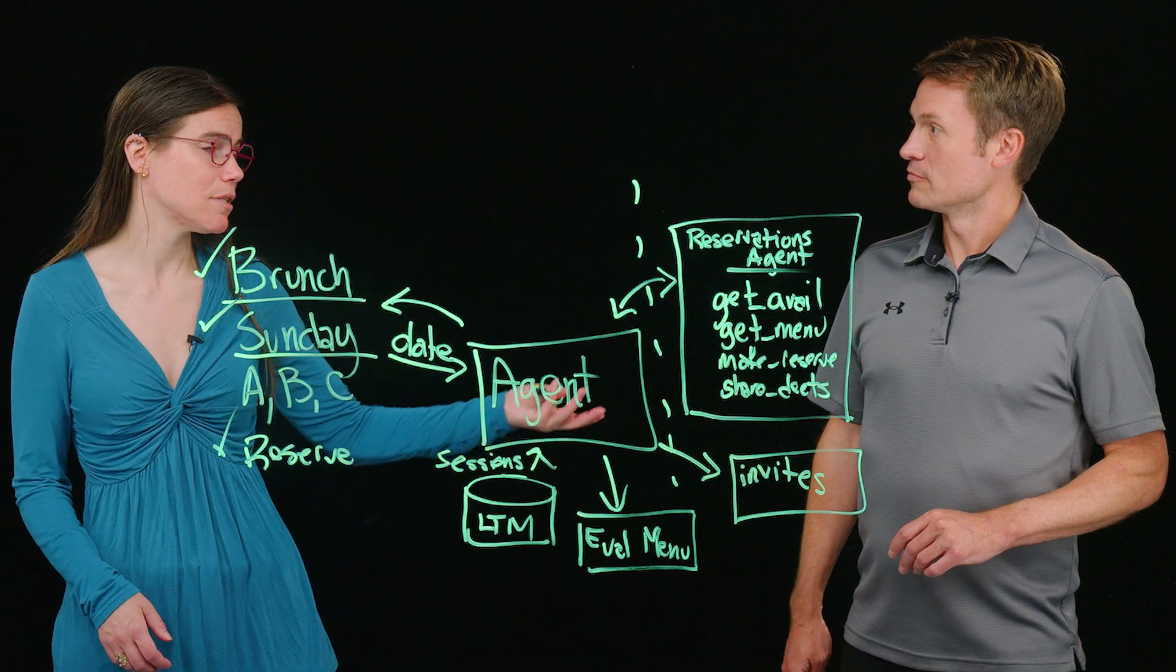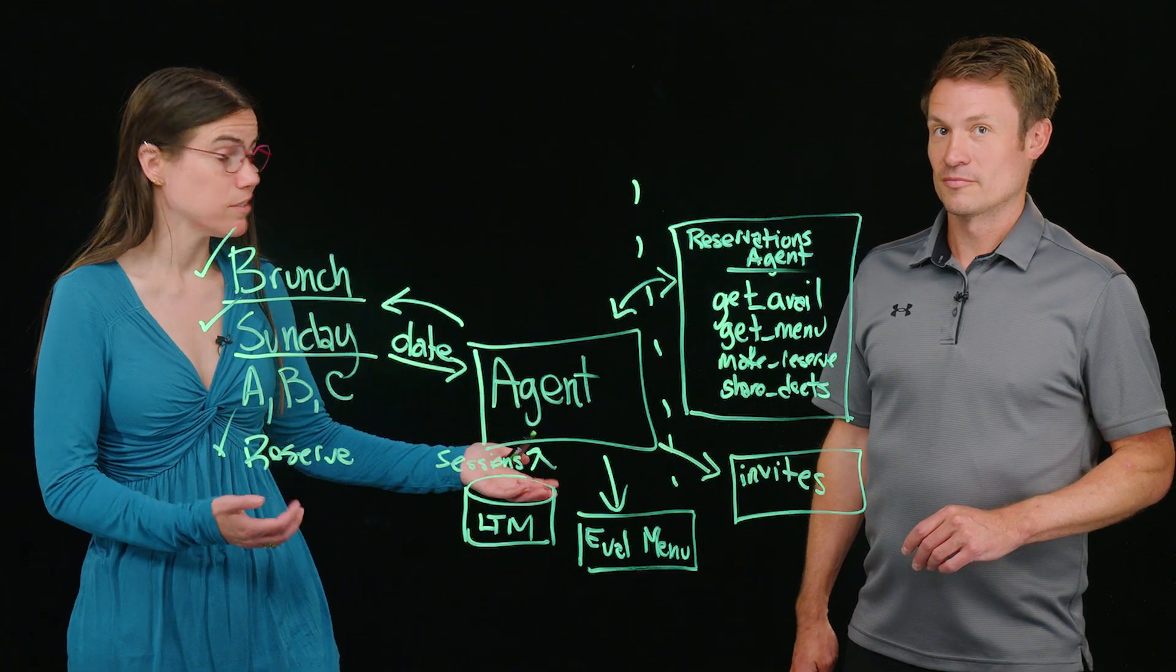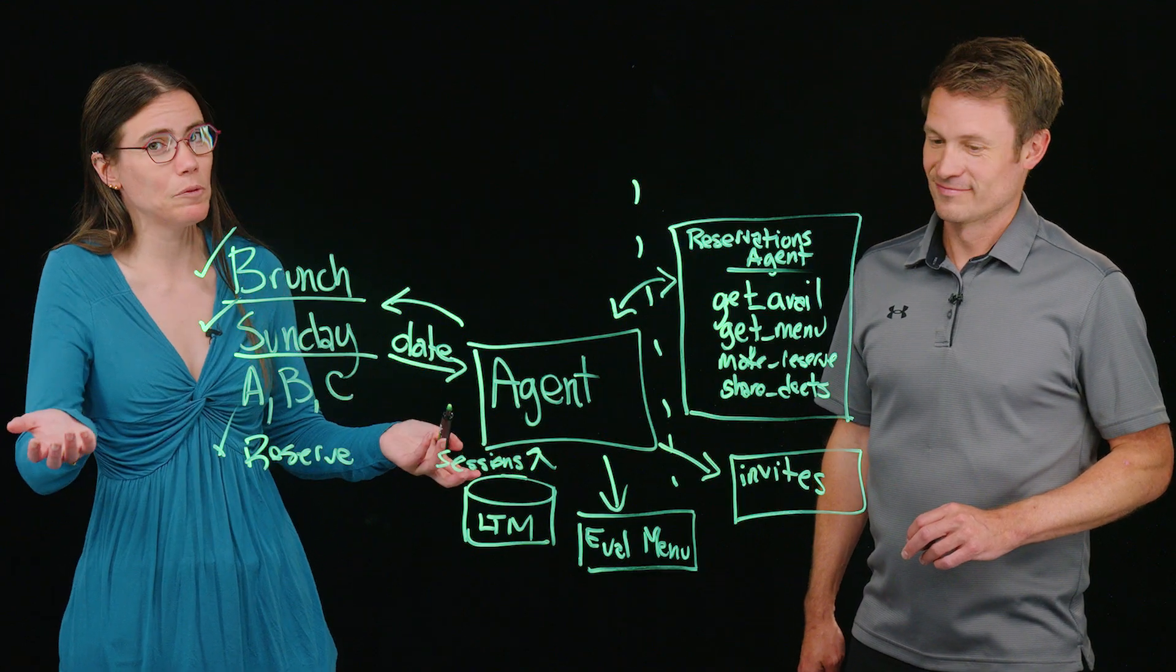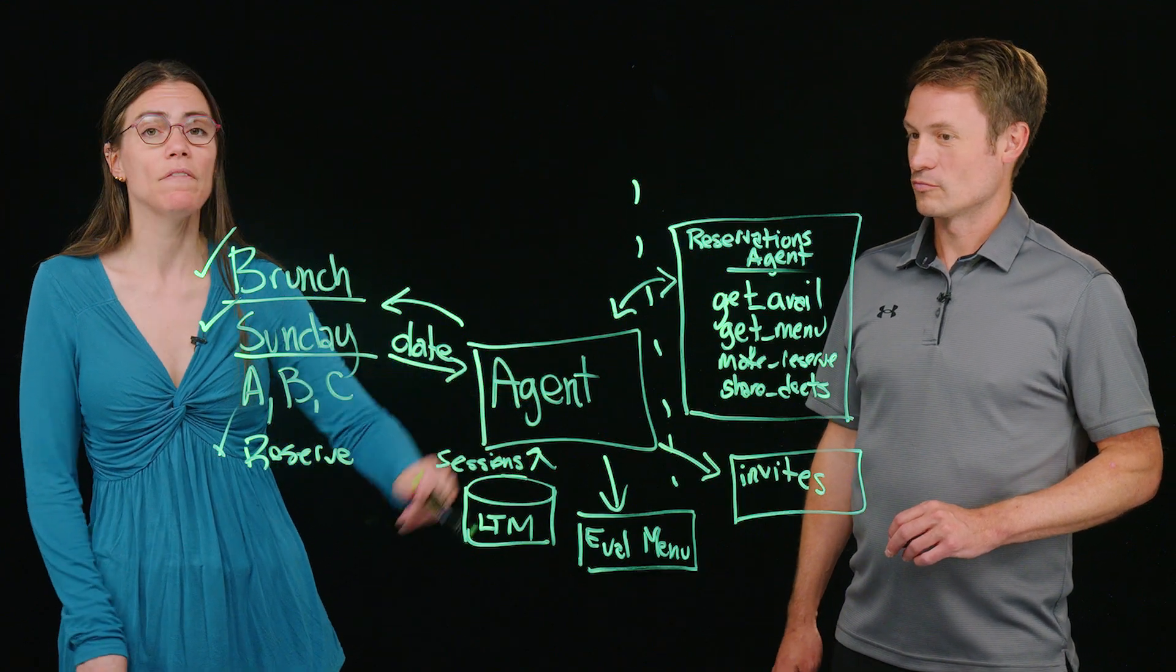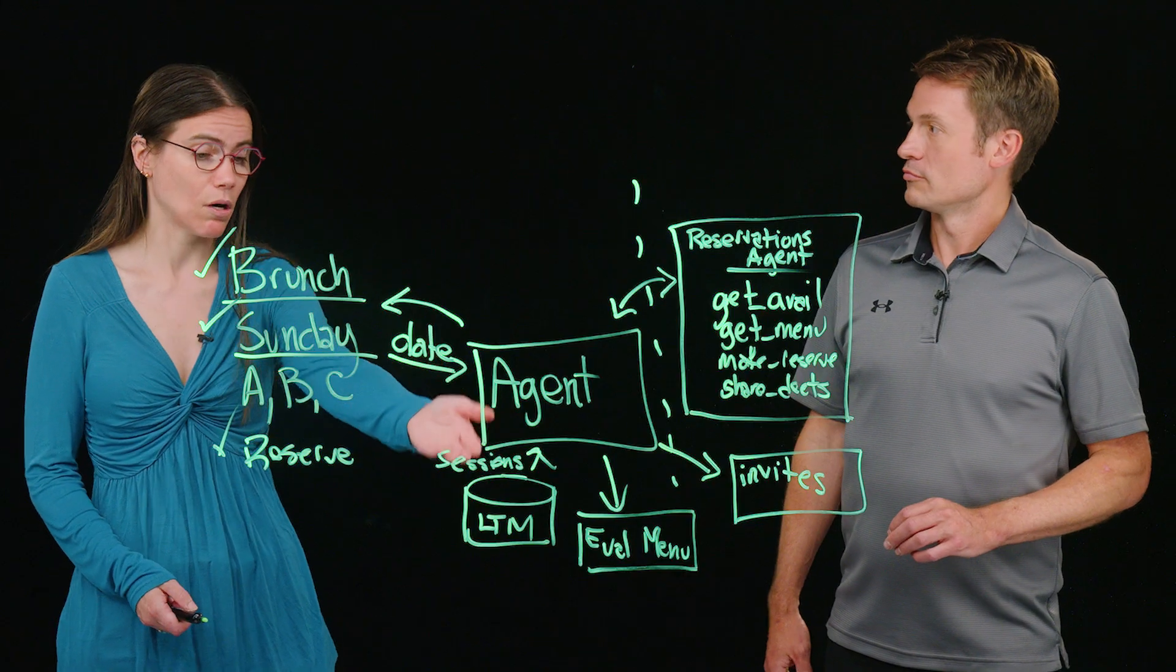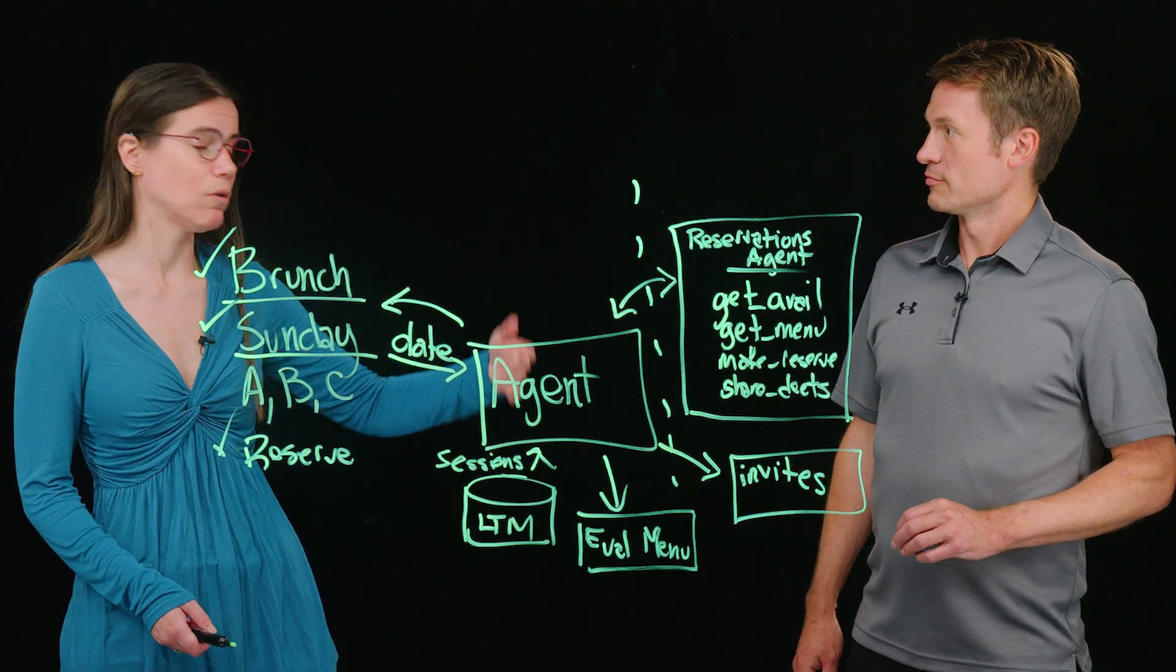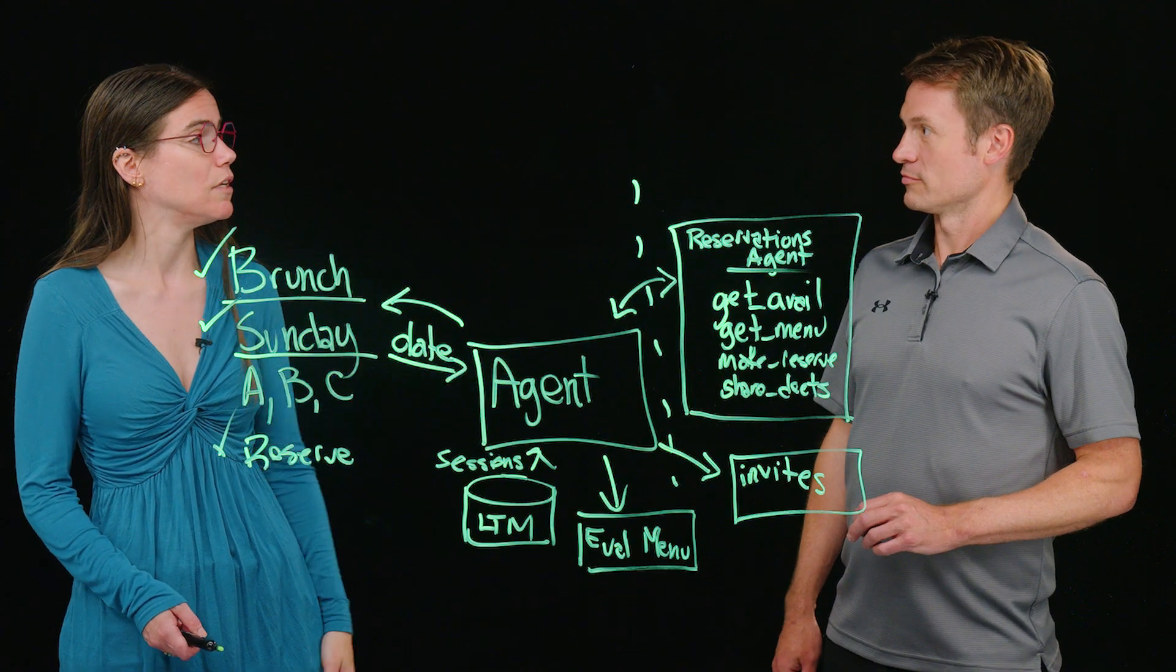Maybe someone wants a text message. Someone else wants a calendar invite. Someone else actually reads their email and would actually respond to an email. That's not me, but it could be them. So we'll set up that invite tool so that it has access to our long-term memory, information about the people we're inviting, and then my mail, my calendar, et cetera, so that it can send the invites to everyone.